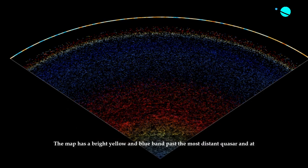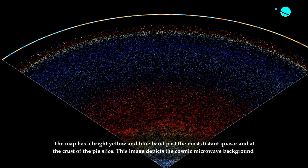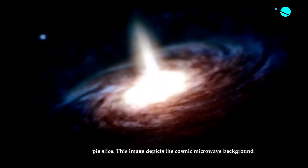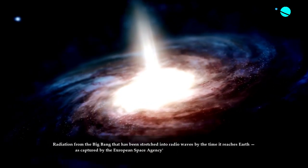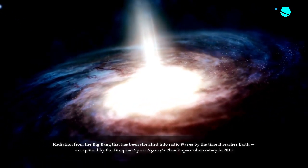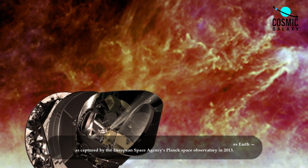The map has a bright yellow and blue band past the most distant quasar, and at the crust of the pie slice. This image depicts the cosmic microwave background radiation from the Big Bang that has been stretched into radio waves by the time it reaches Earth, as captured by the European Space Agency's Planck Space Observatory in 2013.